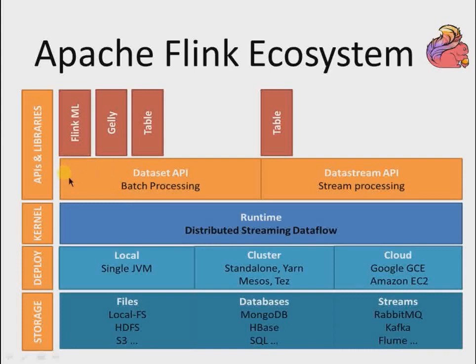The fourth component is API and Libraries. The first API is the DataSet API. This API handles data at rest generated by sources such as reading text or CSV files from a local collection, and allows users to implement operations like mapping, filtering, joining, grouping, and more. Batch applications are also executed using the streaming runtime. Best practices include using the print command for printing a dataset, the collect command for retrieval, and name commands on operators for easier searching in logs.